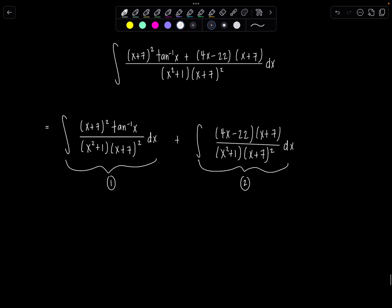So integral number 1, notice right off the bat we can just cancel out x plus 7 quantity squared. So we're just left with integral tan inverse of x over x squared plus 1 dx. Oh, lovely.